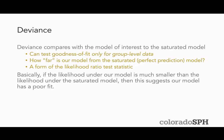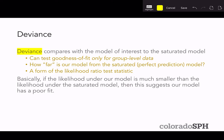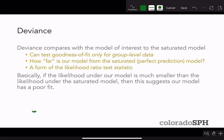Deviance is a numeric value that compares the model of interest to the saturated model. You can use this model deviance to test goodness of fit and get a p-value, but only for group-level data. The intuition behind deviance is we want to know how far our model is from the saturated model. It's a form of the likelihood ratio test statistic — basically, if the likelihood under our model is much smaller than the likelihood under the saturated model, that suggests our model has a poor fit. Conversely, if the likelihood under our model is close to the likelihood under the saturated model, that suggests our model has a good fit.